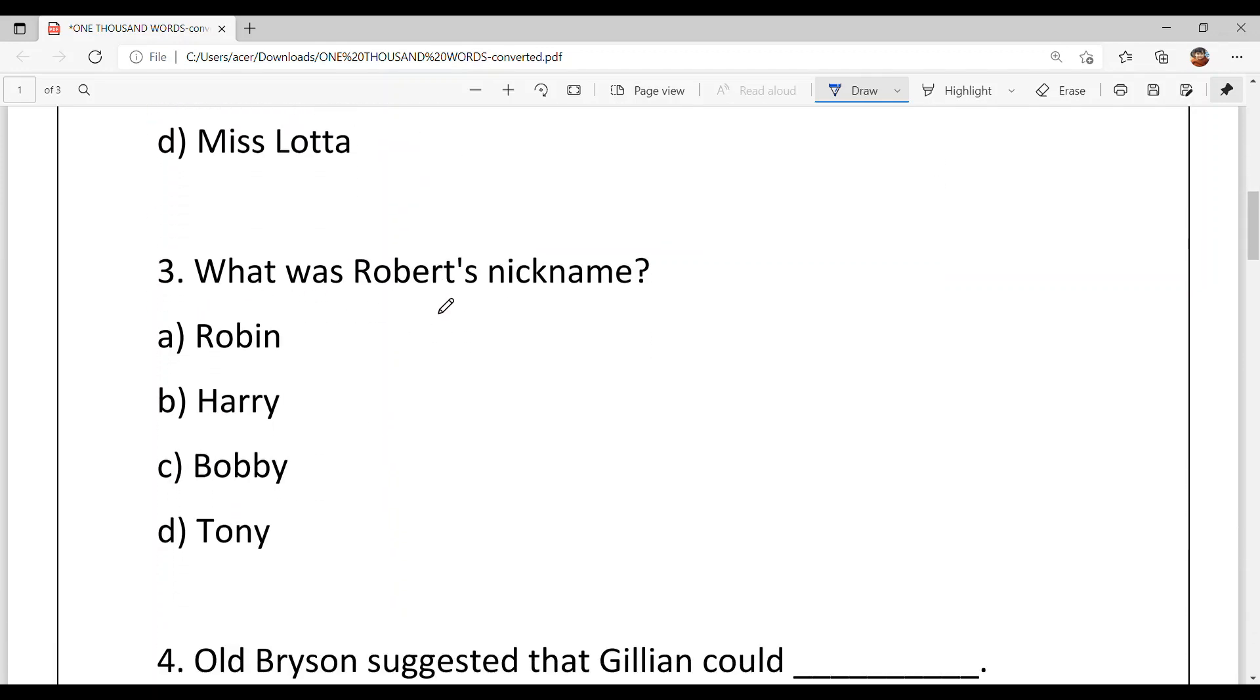Third, what was Robert's nickname? Option A, Robin. Option B, Harry. Option C, Bobby. Option D, Tony. And option C is your answer, Bobby.